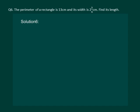Let us read the question. The perimeter of a rectangle is 13 cm and its width is 2 and 3 by 4 cm. Find its length.